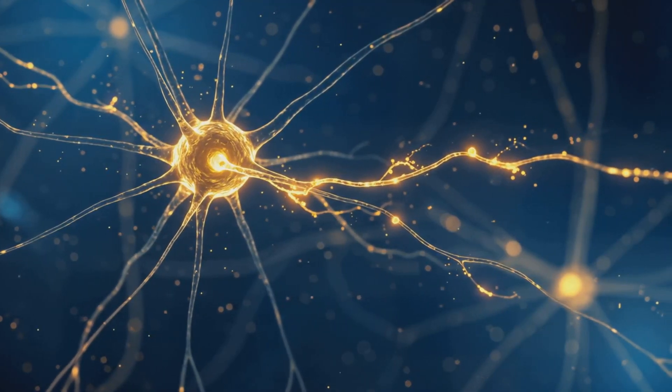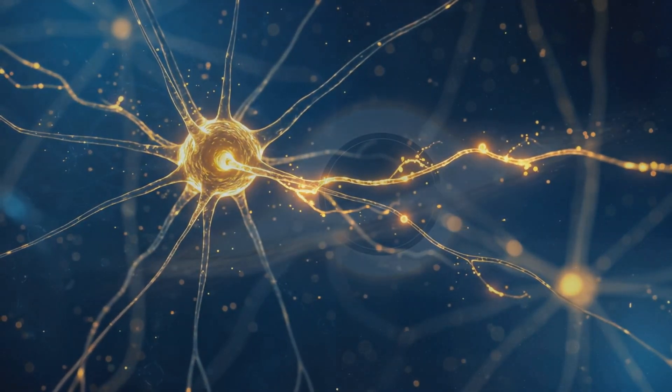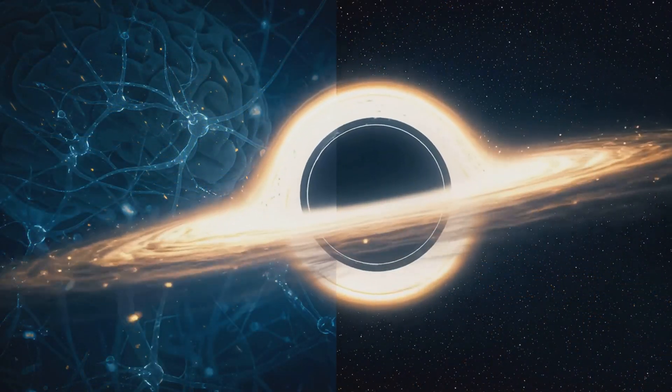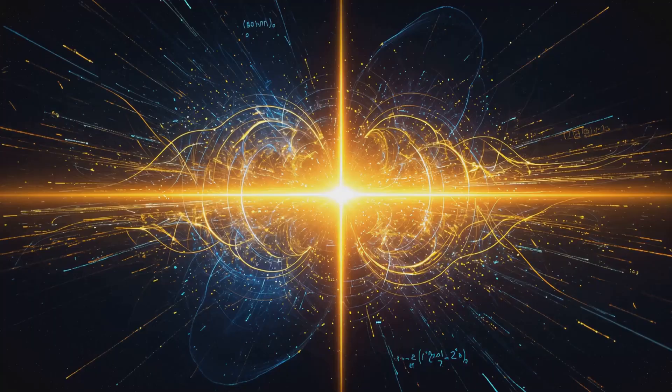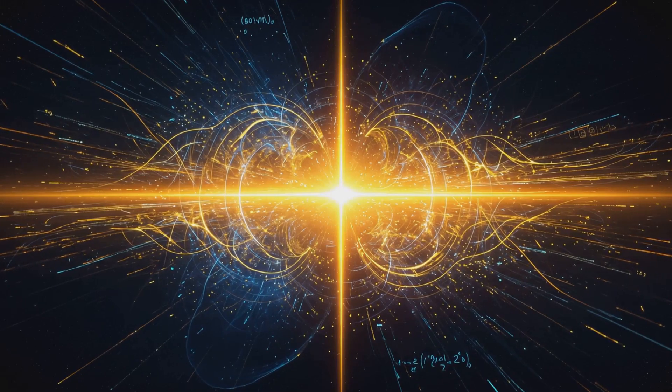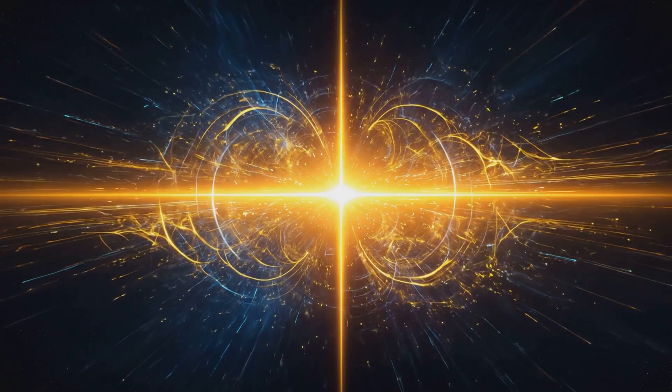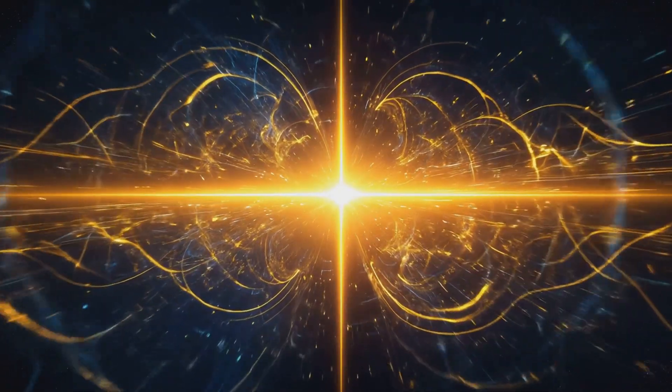Our brains, too, are part of this field. Microtubules inside neurons resonate like biological Tesla coils. They modulate the quantum field just as stars and black holes do. Thought itself is a Fourier transformation, selecting a reality from the infinite interference of the quantum field.